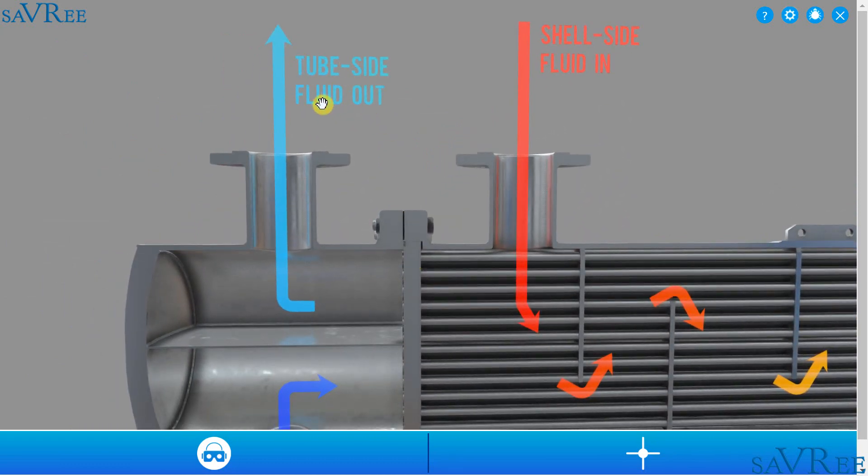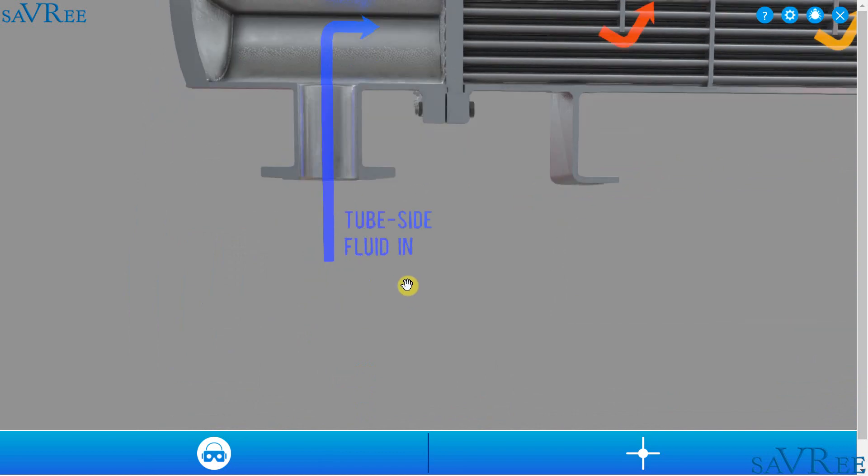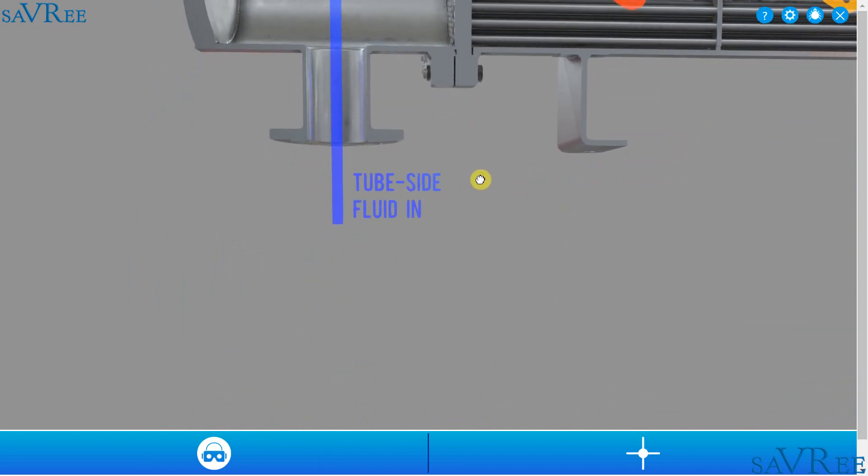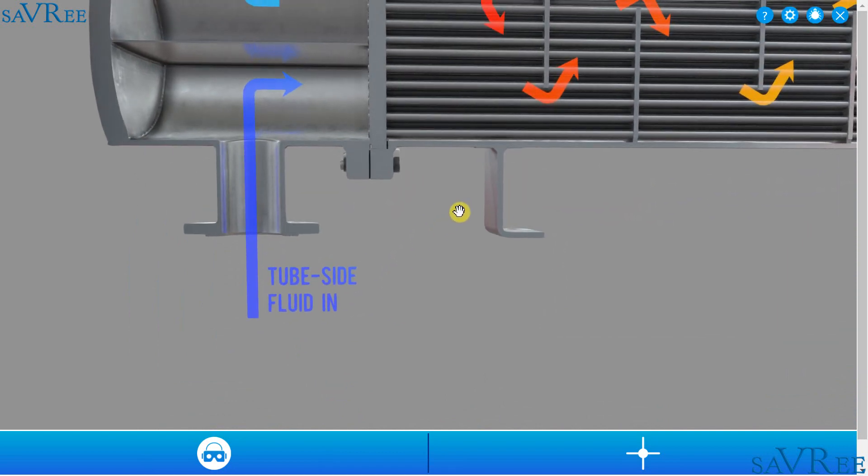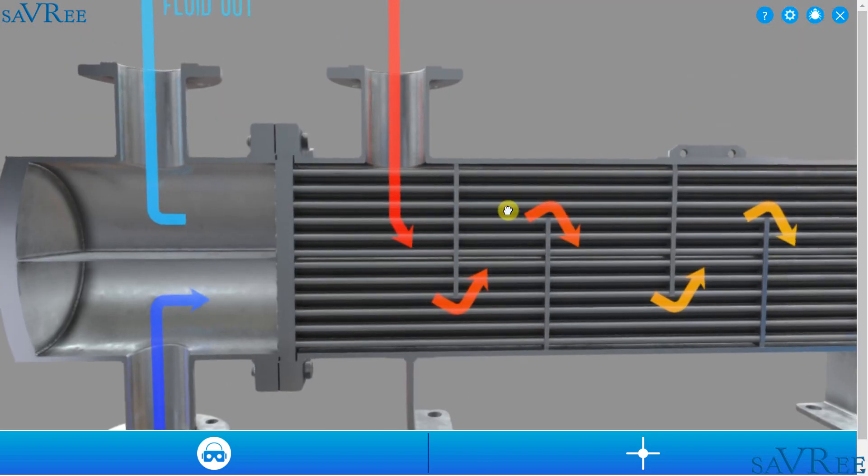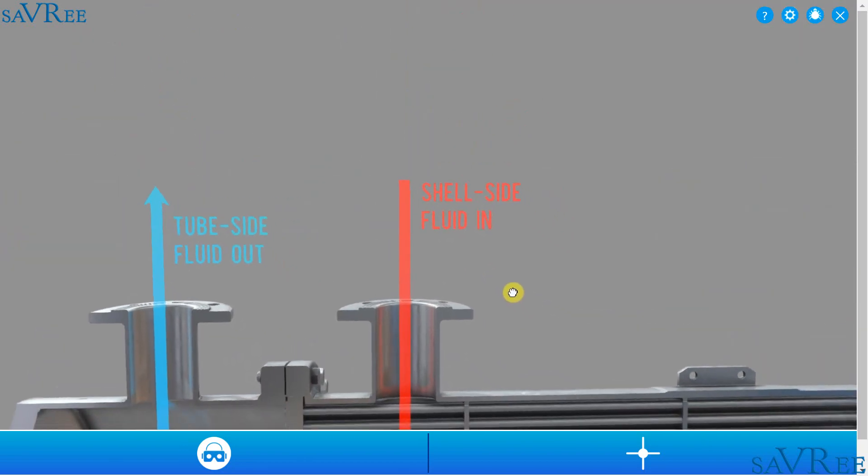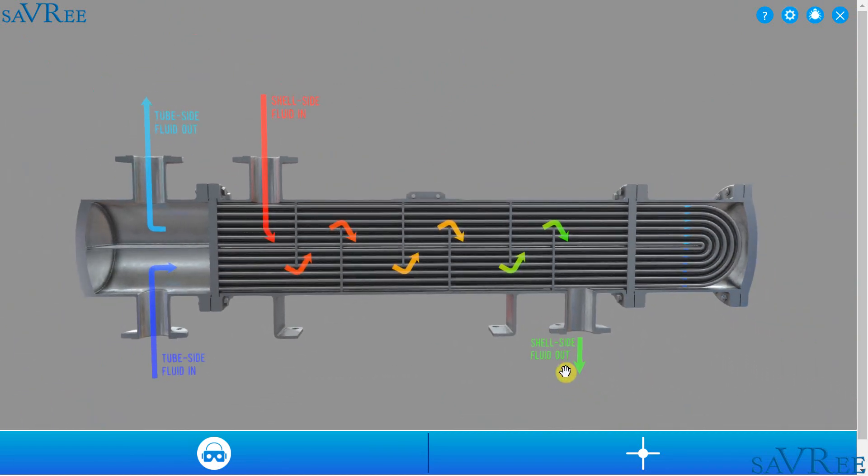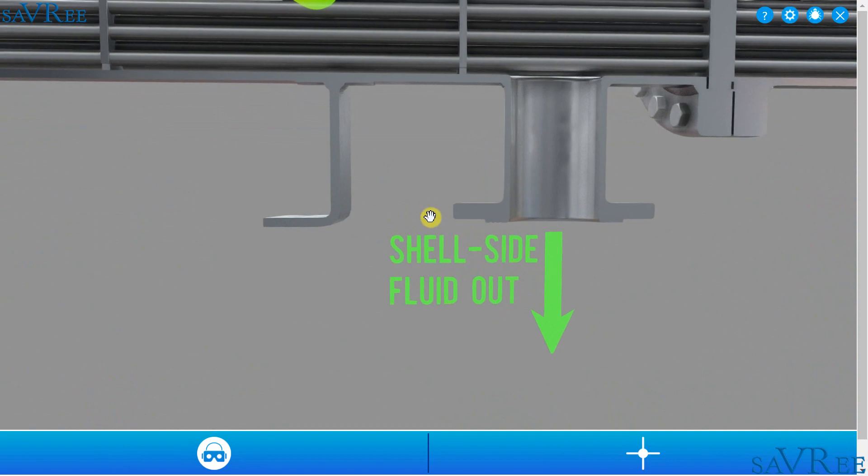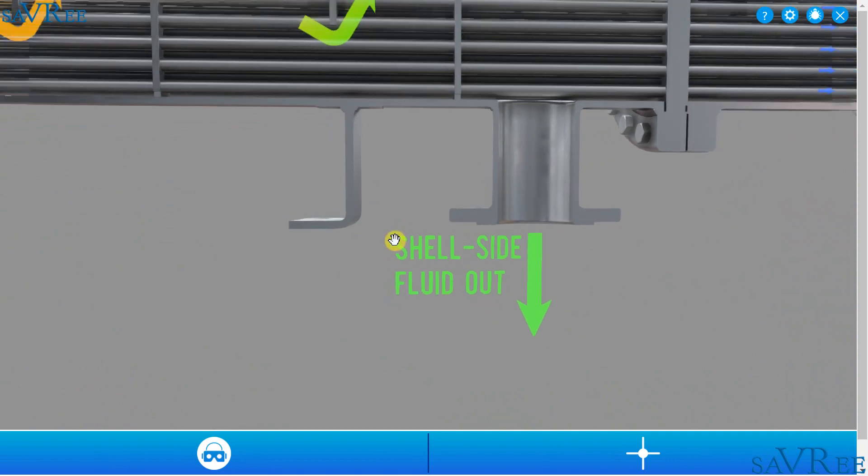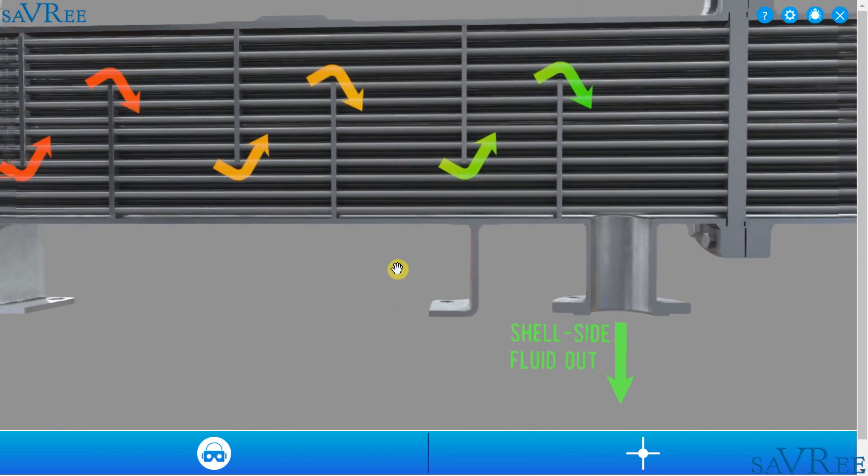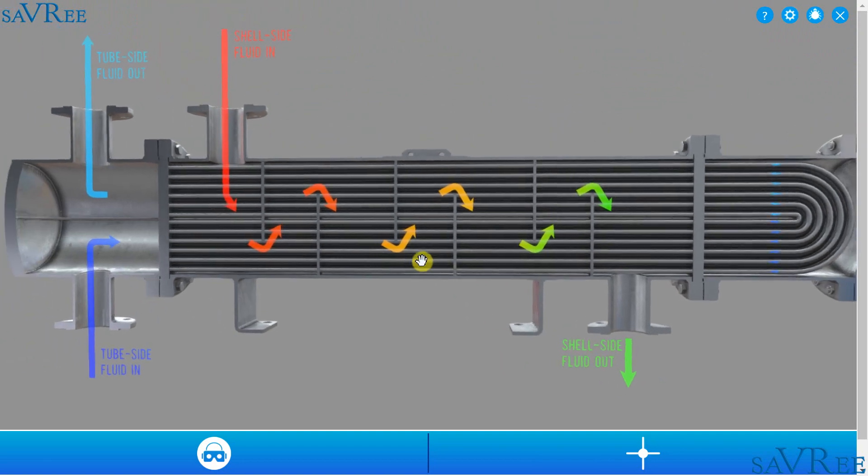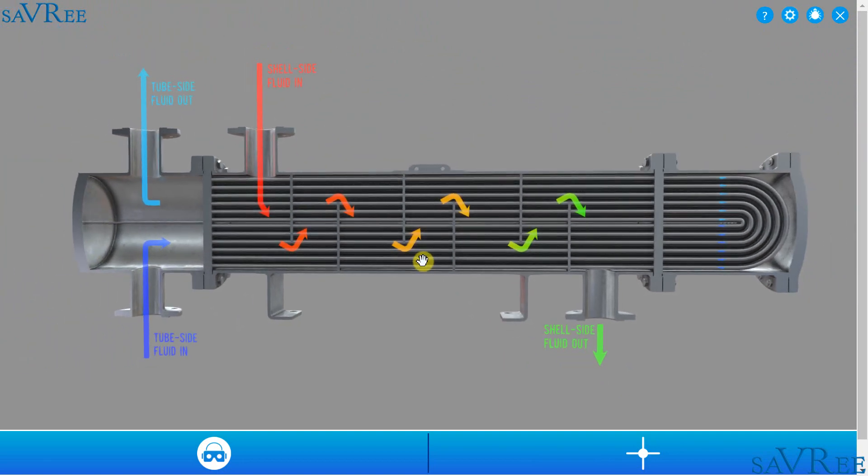We can see here tube side fluid out, tube side fluid in. When we say tube side, we mean the medium that is flowing through the tubes. The opposite of tube side is shell side. We'll have shell side fluid in and shell side fluid out. That is this lower section here or the lower pipe. Let's get to an overview so we can follow the flow through the heat exchanger.